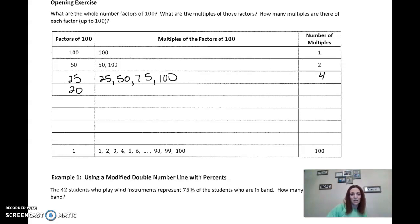And don't stress too much about this part. Just write down how many multiples are there? Well, let's see. 25, 50, 75, and then 100. 1, 2, 3, 4. Okay, what's another one that goes into 100? How about 20? 20, 40, 60, 80, 100. 1, 2, 3, 4, 5.